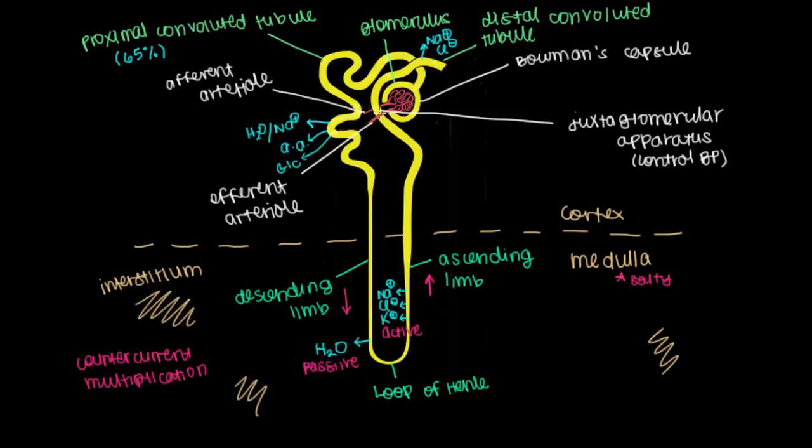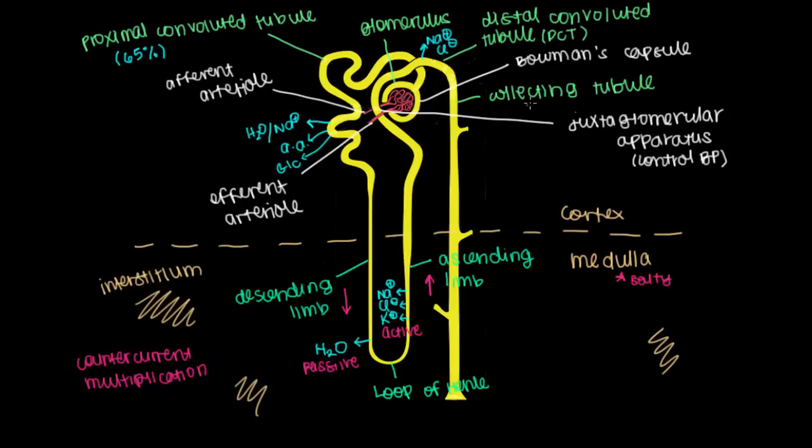So now that the distal convoluted tubule has come up here and kissed the glomerulus and kind of come out here, it's time to collect whatever leftover fluid we have. And we do so in this guy right here. This is called the collecting tubule or the collecting duct. So it collects things that we have left over in the lumen or inside of this nephron. And one thing to note is that there are many DCTs or distal convoluted tubules that feed into this single collecting duct.